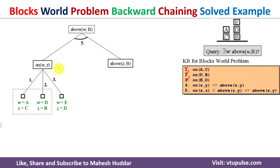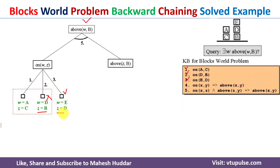We also need to satisfy above(z, b). Considering the second rule first, z becomes b, giving above(b, b). But b cannot be above itself — b is a single block — so this rule is not satisfiable.